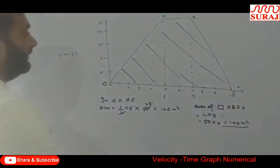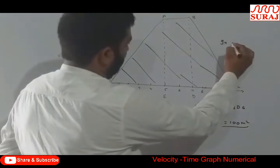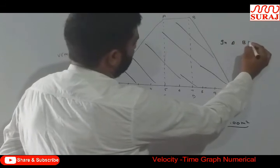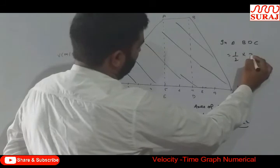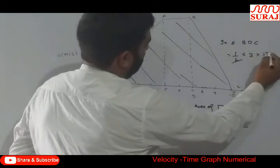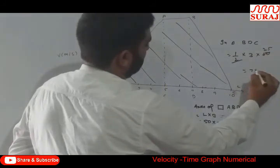Now, again in triangle, in triangle BDC, 1 by 2 into base into height. So, this is equal to 75.